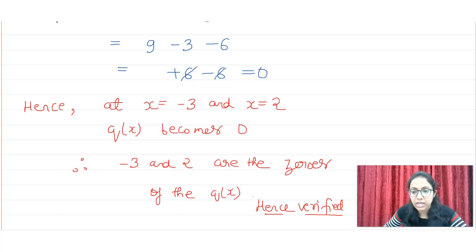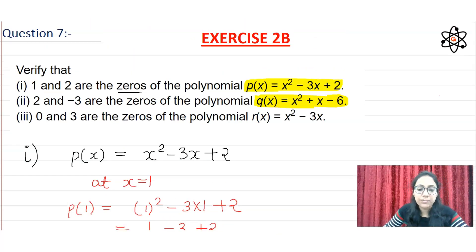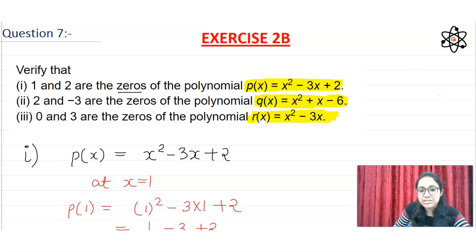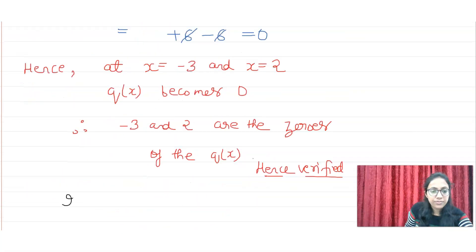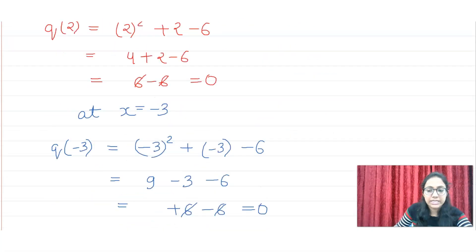Now let's go to the third part. In the third part, we are given R(x) = x² - 3x, and we have to show that 0 and 3 are the zeros of R(x).